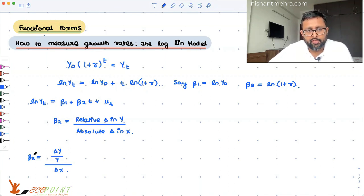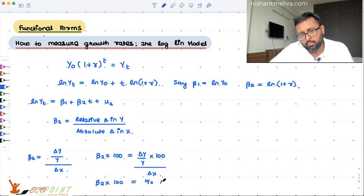So if I want to write this as the percentage change in y, I need to multiply this with 100. So if I multiply both the sides by 100, I get this. So beta 2 into 100 is equal to percentage change in y upon delta x like this.